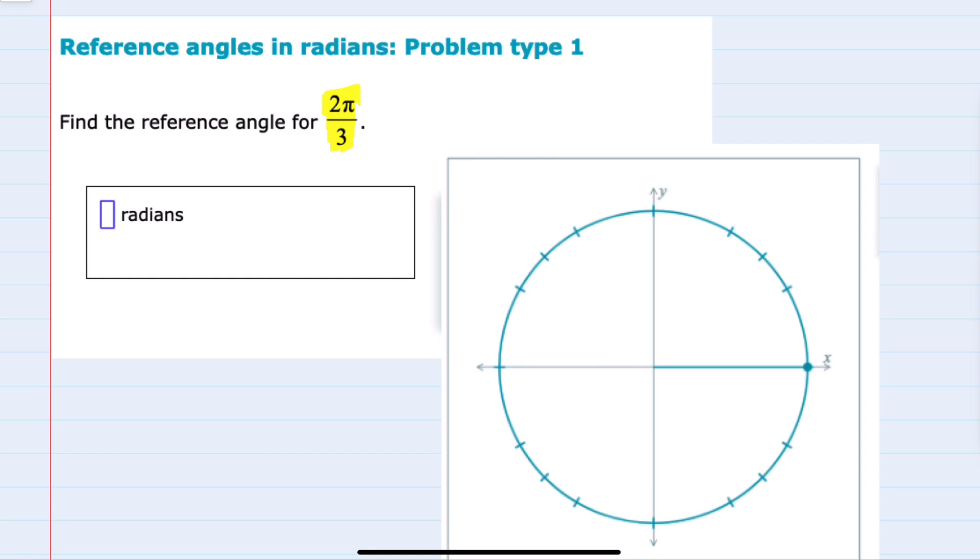First, starting at the positive x-axis being 0 radians, then we have a pattern that moves by fourths. So this would be in the middle here π/4, and then 2π/4 which simplifies to π/2.